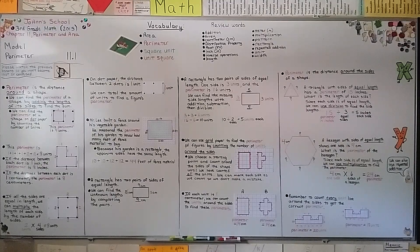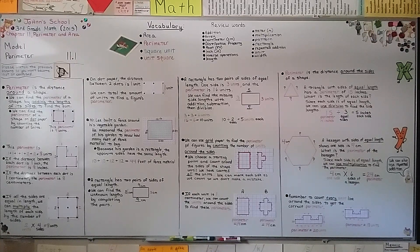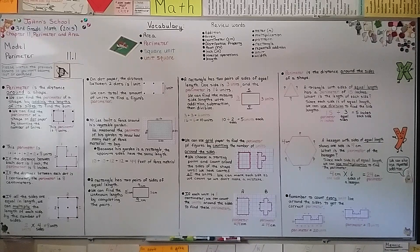So remember, perimeter is the distance around the outside of a shape. We're going to continue on in Lesson 11.2, talking about how we can find perimeter and find the measure of perimeters. I hope I'll see you there. Bye.